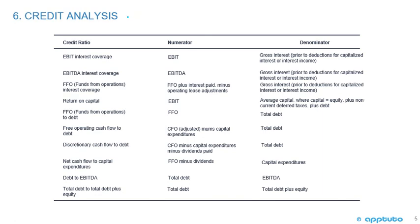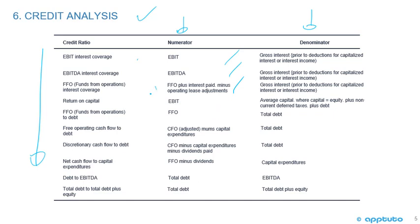Now we look at ratios for credit analysis. For EBIT interest coverage, the numerator is EBIT and the denominator is gross interest prior to deductions for capitalized interest or interest income. EBITDA interest coverage uses EBITDA as numerator with the same denominator. For funds from operations interest coverage, the numerator is funds from operations plus interest paid minus operating lease adjustments, with the same denominator.